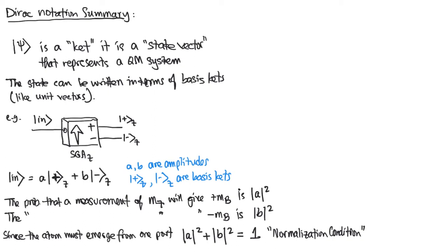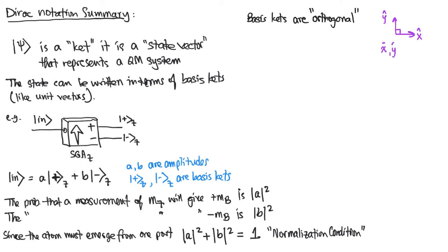The other thing we know about basis kets is that basis kets are orthogonal. Usually when we talk about vectors, orthogonal means perpendicular to each other. So orthogonal brings to mind the fact that x-hat and y-hat unit vectors are perpendicular — we would say x-hat and y-hat are orthogonal, for geometric vectors.